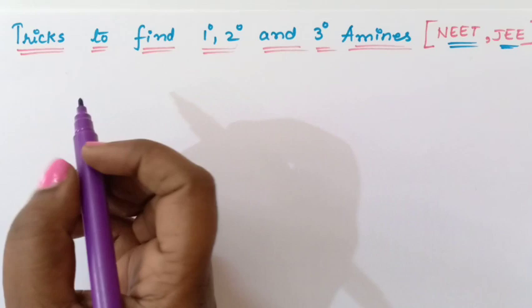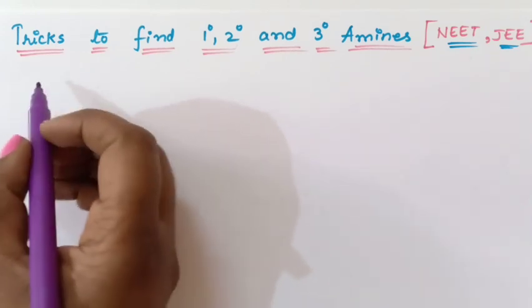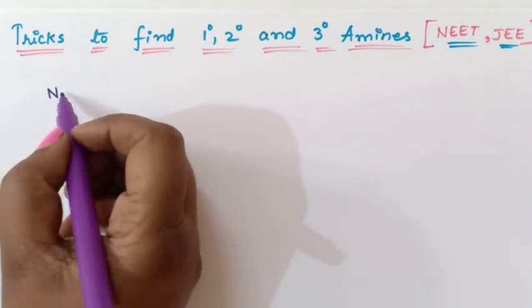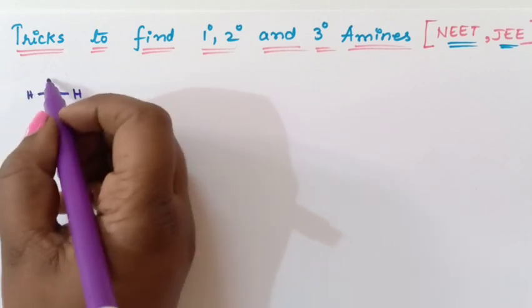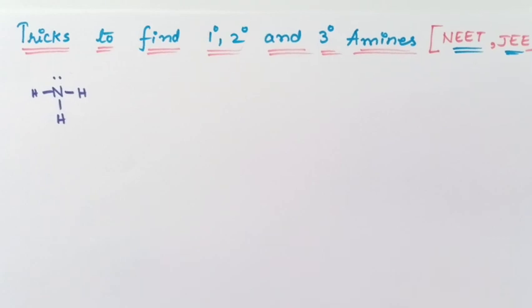So now what is the formula for ammonia students? It is NH3. You can write 3 hydrogens here and 1 lone pair of electrons will be present. So this is the formula for ammonia NH3.